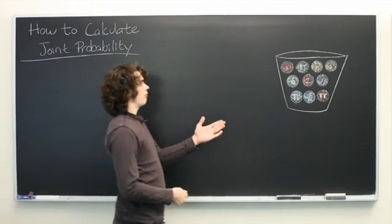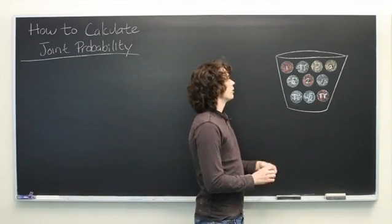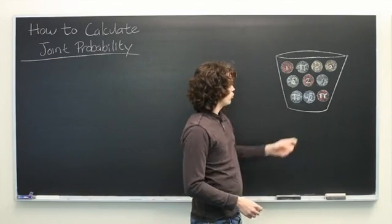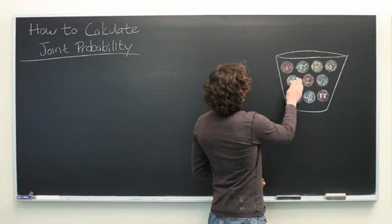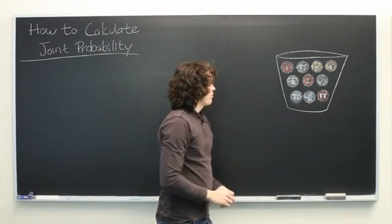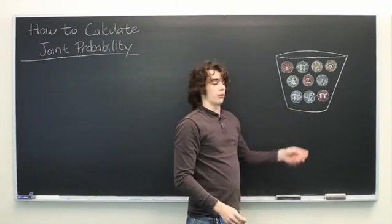So here we have a bucket of balls, each with a color. We have red, green, blue, and orange. Each ball also has a number on its face, some of which are rational, one, two, and three, some of which are irrational, such as pi and square root of two.